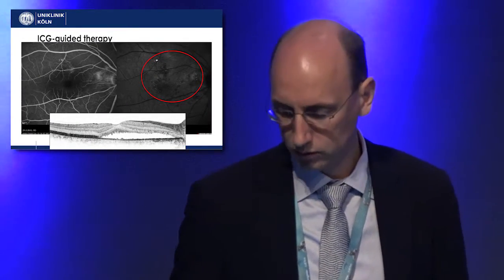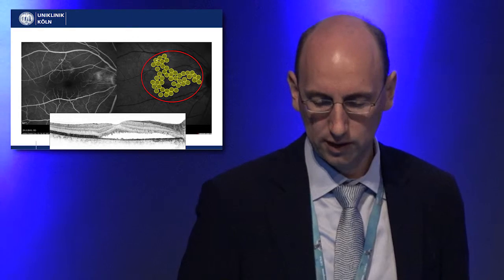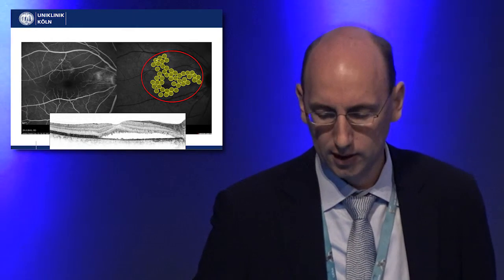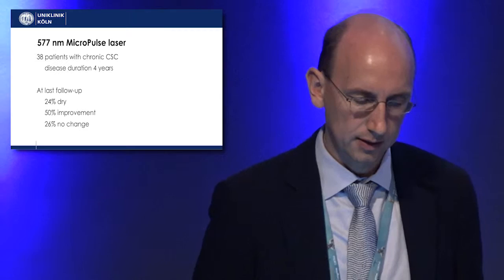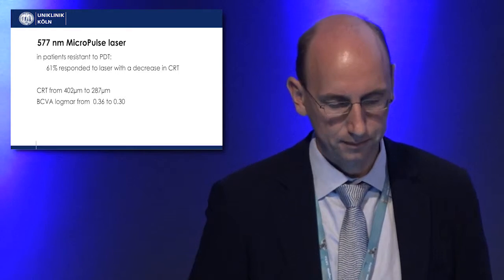We use ICG-guided therapy and retreat all areas showing hyperfluorescence, treating them very densely. We then wait six weeks for results and repeat treatment if necessary. If fluid persists, we turn to PDT. In one series we conducted, the disease duration was really long — four years on average — and even in these chronic cases, around 75 percent of patients improved overall; 24 percent were completely dry. Notably, 61 percent of patients who had not responded to previous PDT still showed improvement with MicroPulse laser.